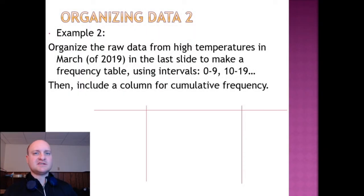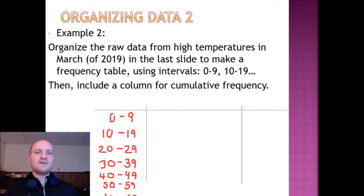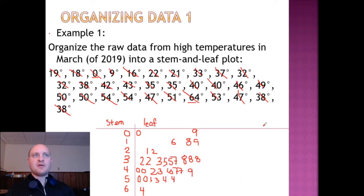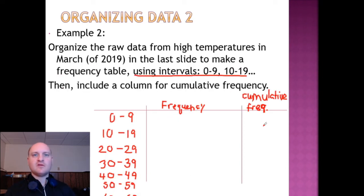Now this question asks us to take the data we just put into a stem and leaf plot and organize it into a cumulative frequency table. So our first step is to set up the intervals. Now they did give us intervals to use here, but at this point we have to go back and look for frequency and cumulative frequency. And this means flipping back and forth between the two tables that we have.